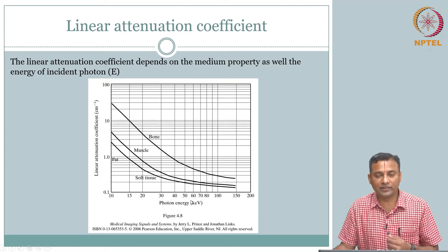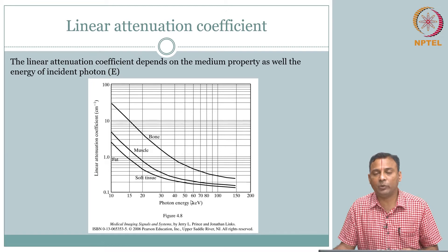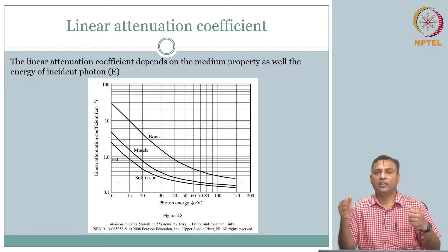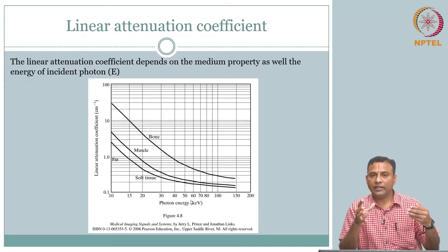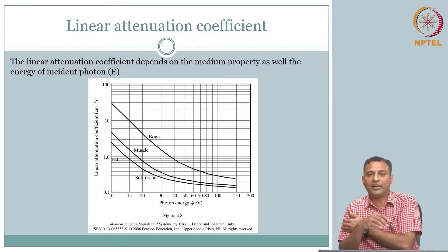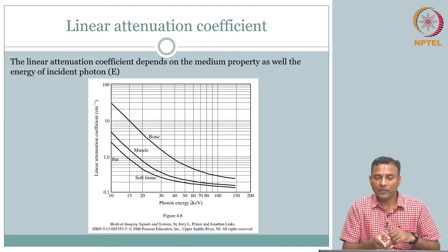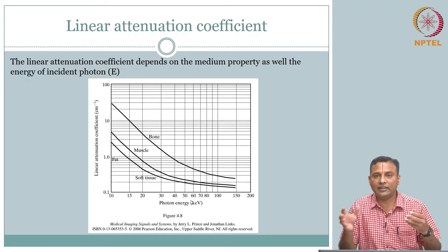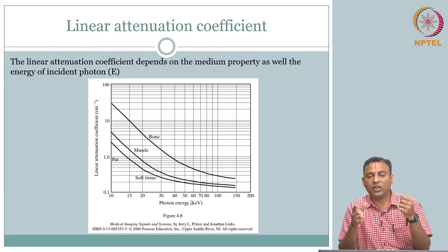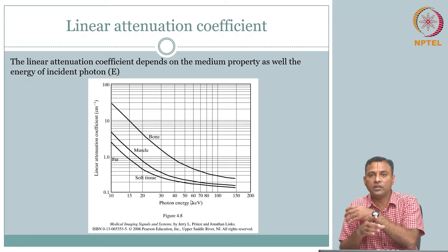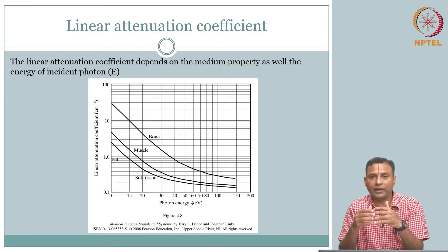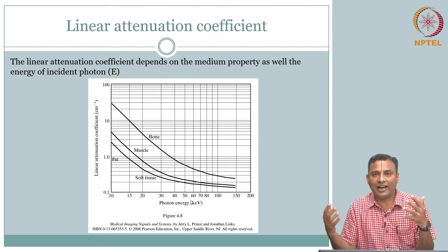Going back to brush up on the interactions we talked about: photoelectric effect and Compton effect. Intuitively, if a photon goes in with high energy it will not interact much and will come out the other direction — that is what we said is inversely proportional. So the signal loss is minimal; the photon energy is not reduced. In the photoelectric interaction, the photon gets absorbed, energy is lost — that is your attenuation.